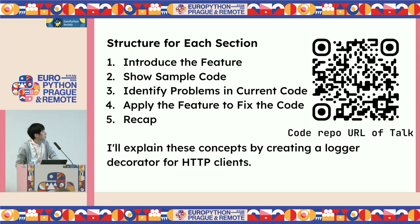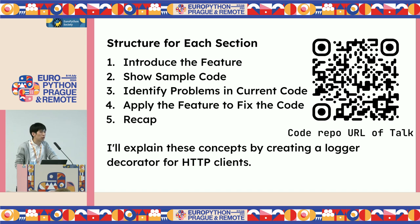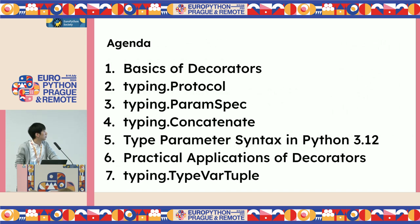Before jumping into the contents, I'll explain the structure. First, I introduce a feature like a PEP and show example code, then identify the feature to fix the code, and recap. I've already uploaded the slides as a PDF and pushed the Python code to the GitHub repo — please check the QR code on the page. I'll show the URL and QR code again at the end of the session. I'll explain the concepts by creating a logger decorator for an HTTP client.